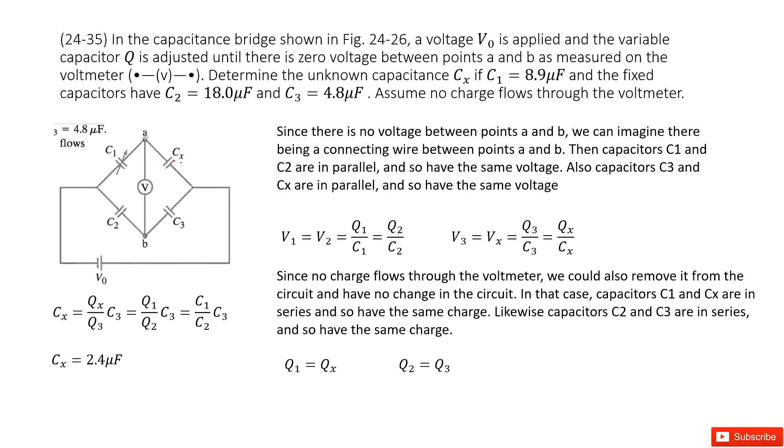From point A to B is connected with our voltmeter. We find the voltmeter is zero. The reading is zero. Then there is no charge flows through the voltmeter. So no charge flows through it.